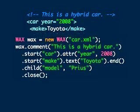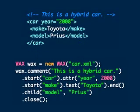First, we'll create a WAX object, passing to the constructor the name of the file we want to create. We could also pass to it an output stream or a writer. If we pass nothing at all to the constructor, the XML will be written to standard out. Then we call methods on the WAX object. These can be chained together if you'd like, or called separately. First we call the comment method and pass to it our comment string.